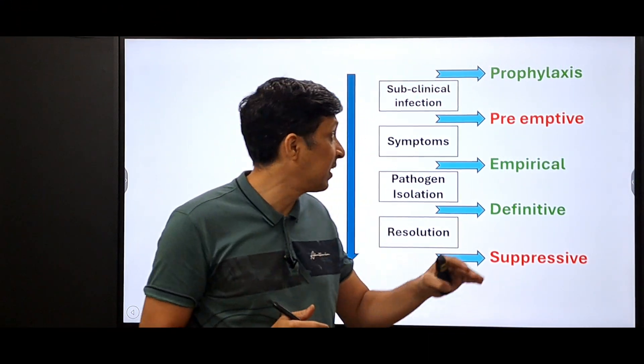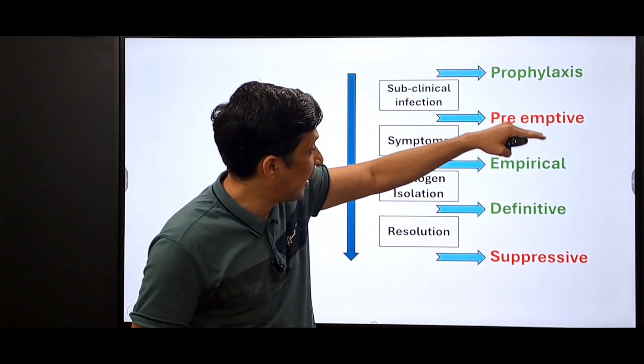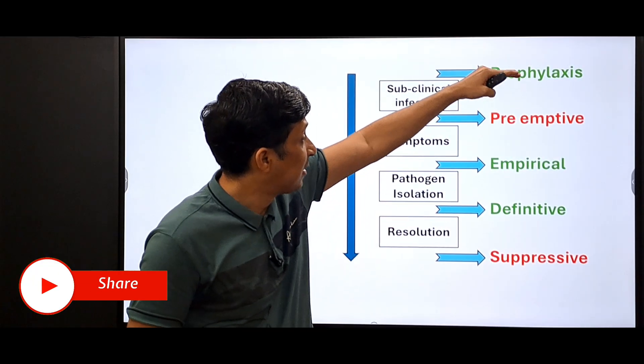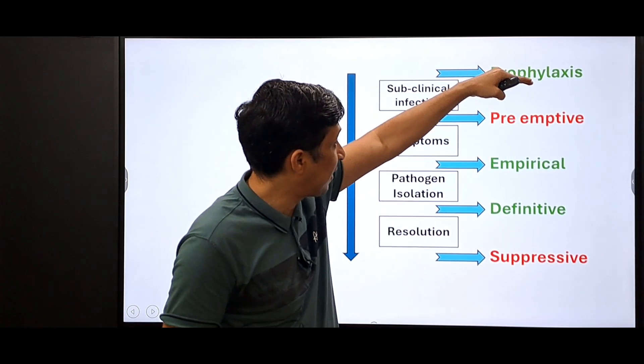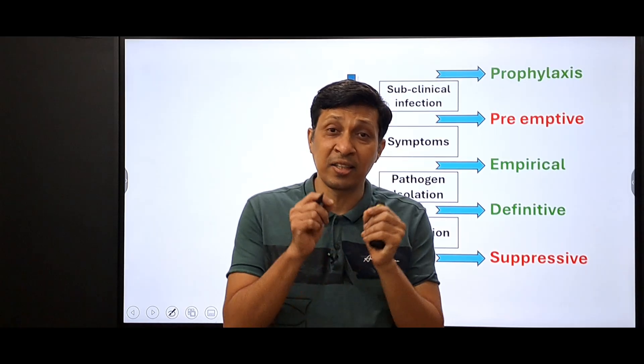We have seen the five different ways of prescribing antibiotics. Three are written in green and two in red — the green ones are commonly used, while the red ones are used rarely and only in specific conditions. After seeing this video, when you prescribe antibiotics to your next patient, you will know the exact logical and scientific reason behind your prescription. If you find this video helpful, share it with your batch mates and friends, and subscribe for more clinical insights.